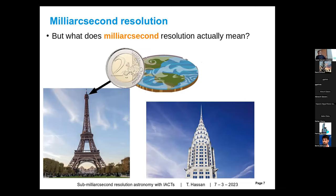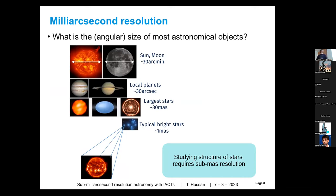I always start by assuming the planet is flat and imagining you are standing in New York looking at the Eiffel Tower in Paris. If someone was holding a two-euro coin at the top of the Eiffel Tower, that would be one milli-arcsecond as seen from New York. The sun and moon are roughly the same angular size — tens of arcminutes — and local planets are at tens of arcseconds.